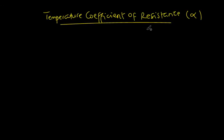Hello and welcome to my science tutorials. Today we are going to be looking at temperature coefficient of resistance, which is denoted by the symbol alpha. So what is temperature coefficient of resistance? It is the quantity that shows how resistance varies with temperature.